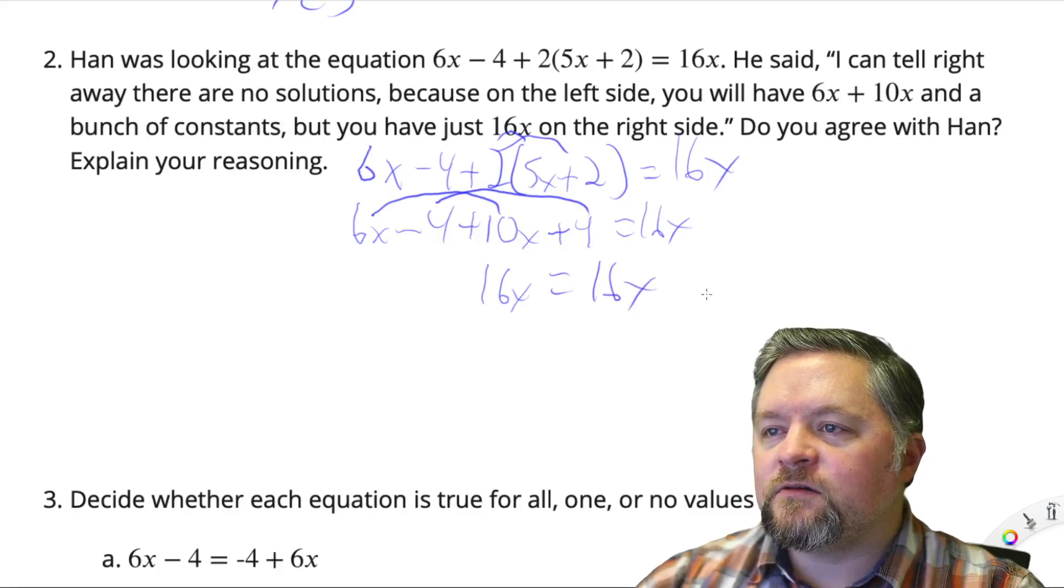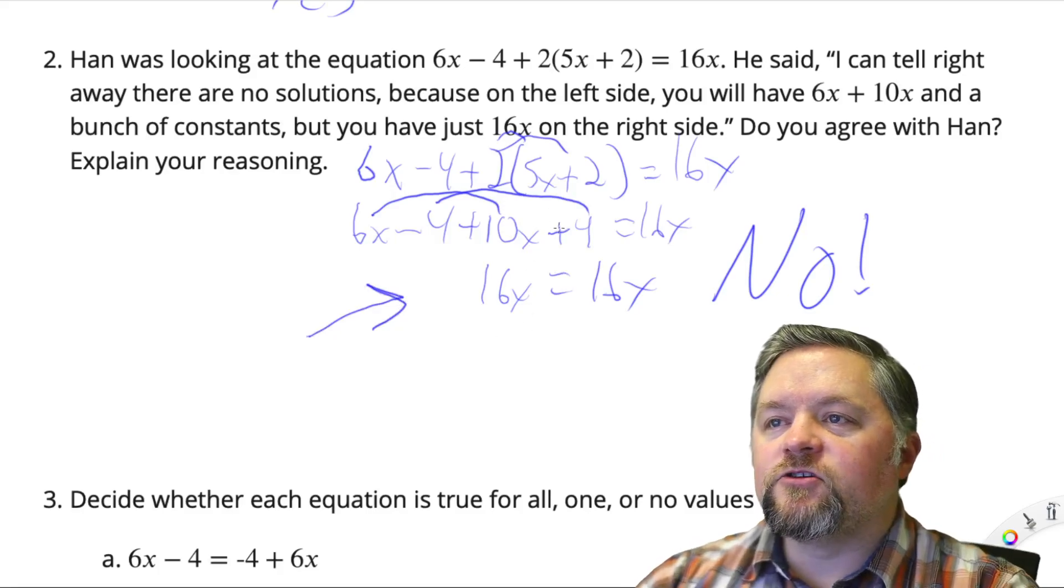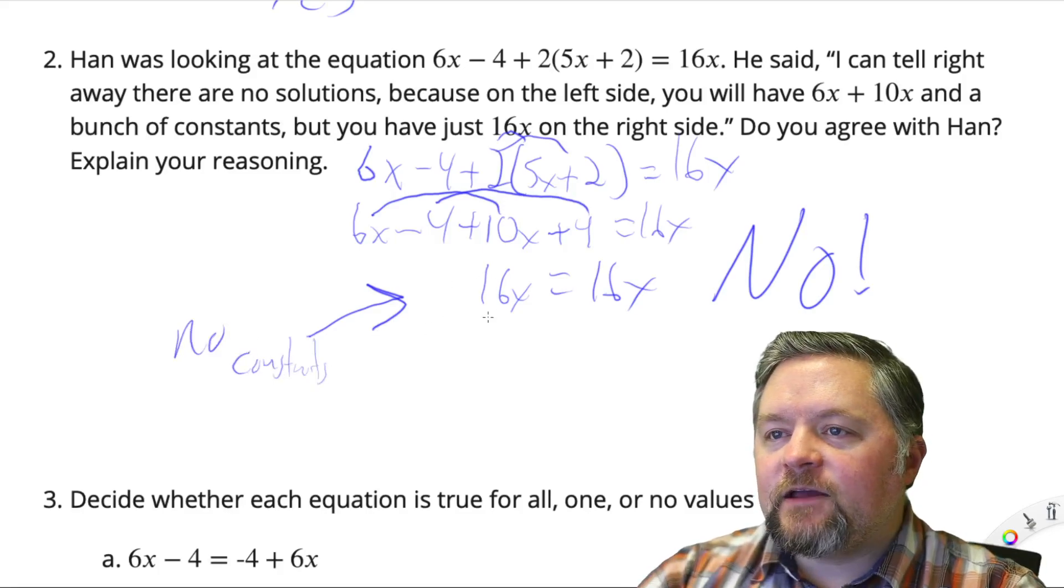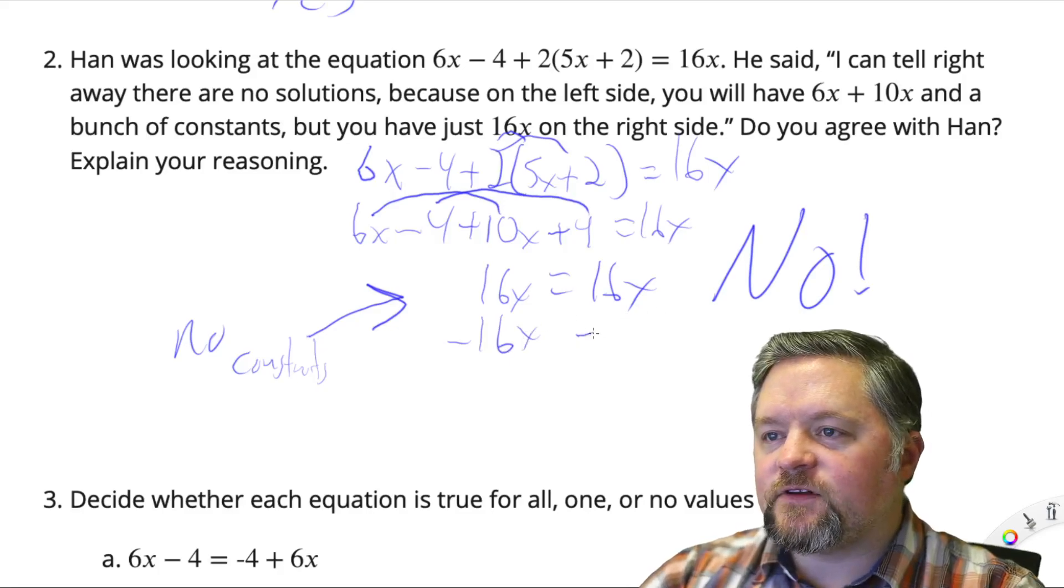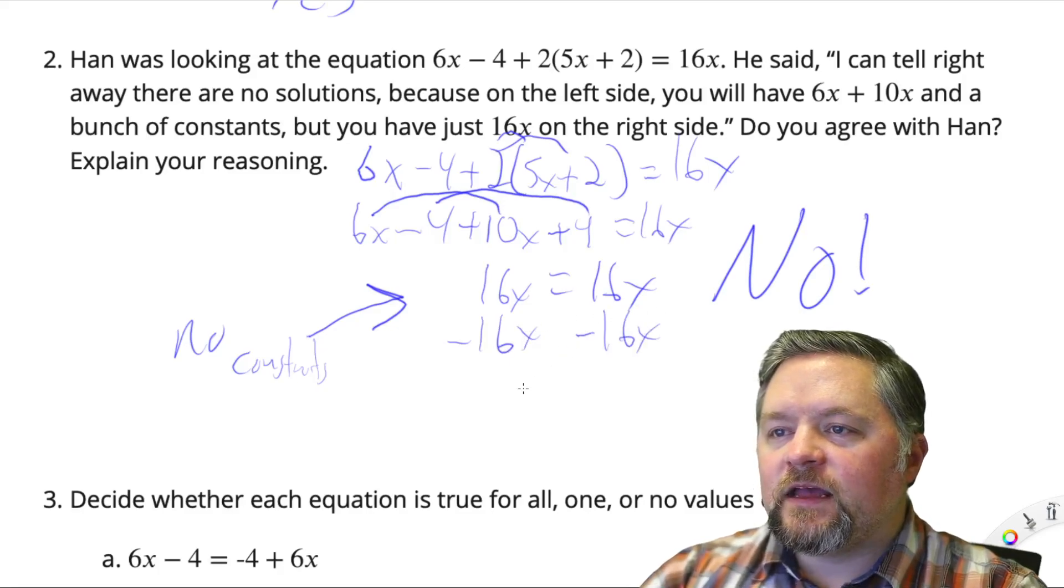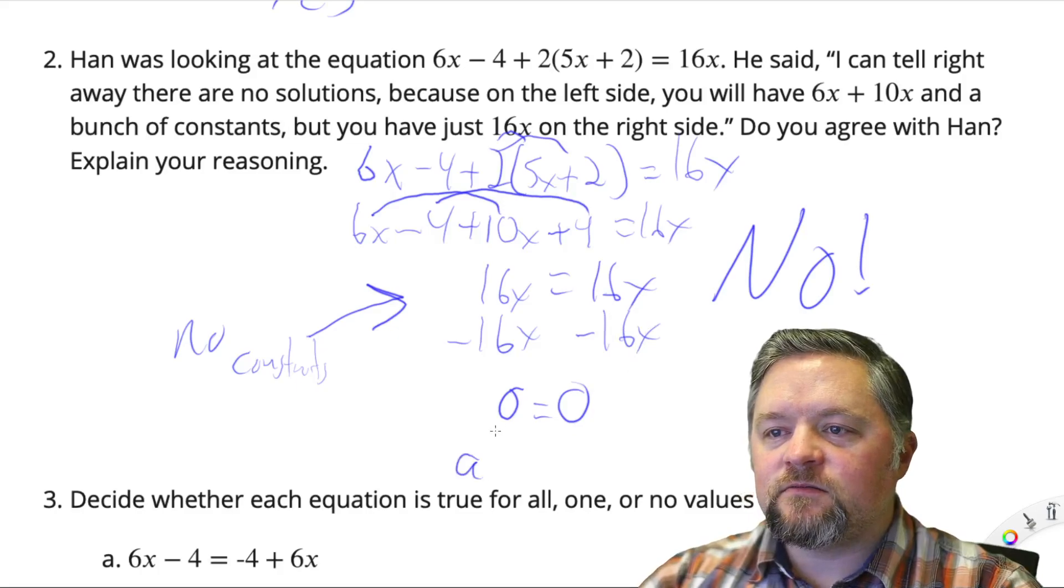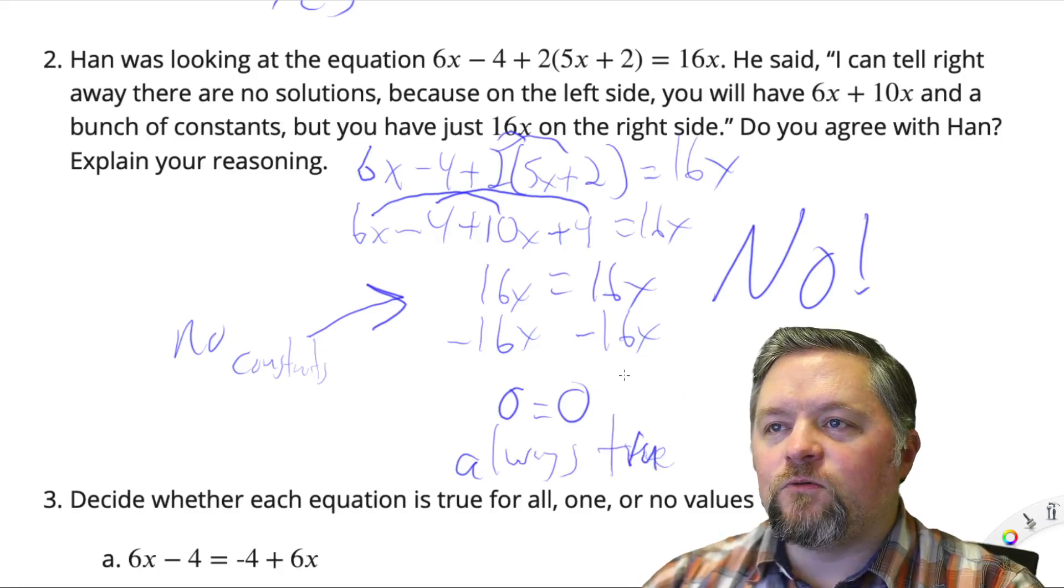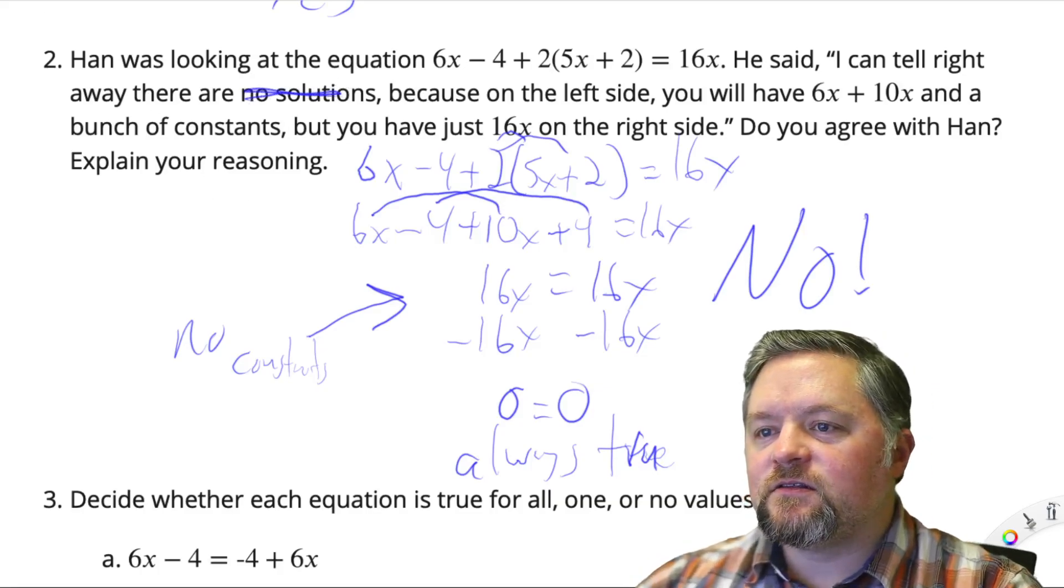Do I agree with Hahn? No. Why? There are no constants left on the left. If I were to try and solve this, I'd have to get rid of the 16x over here. If I take away 16x from that side, I have to take it away from the other side. And then I'm left with 0 equals 0. When does 0 equal 0? Always. That's always true. So that is not no solutions. That's infinite solutions.